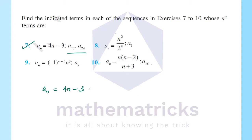First, let's find aₙ. When n is equal to 17, we find the 17th term: a₁₇ = 4 × 17 - 3 = 68 - 3 = 65.